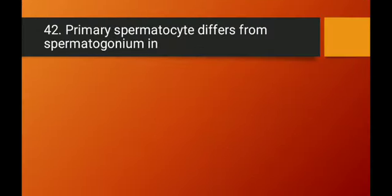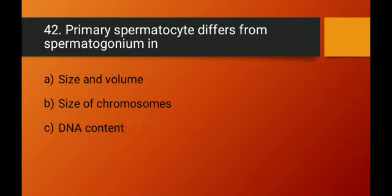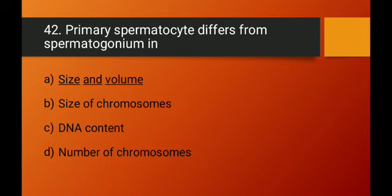Question number forty-two: primary spermatocyte differs from spermatogonium in what way? Both are diploid, so there is no difference in chromosome number or DNA content. The primary spermatocyte is formed by cell enlargement/growth of the spermatogonium, so only the cytoplasm content increases — meaning they differ in size and volume. Option A — size and volume — is the right answer.